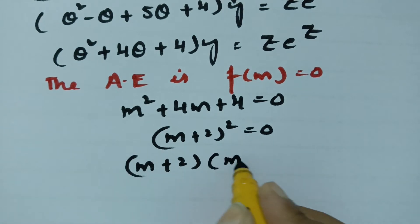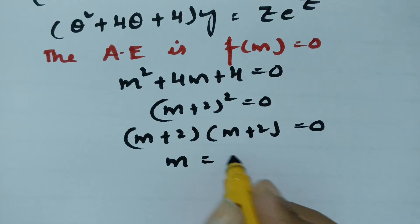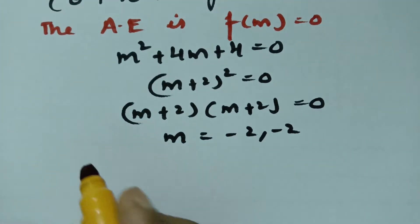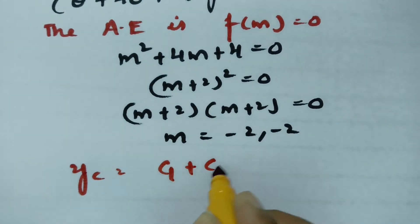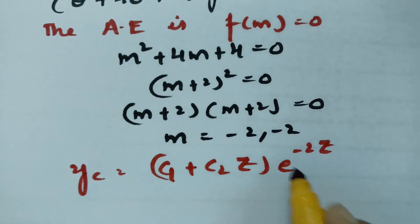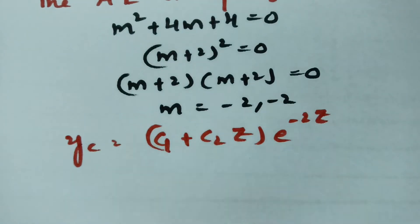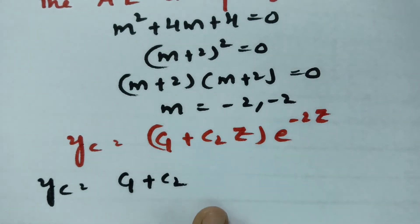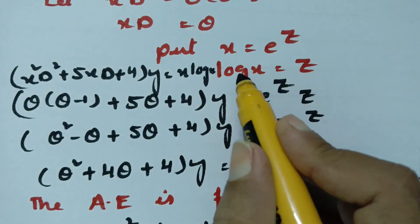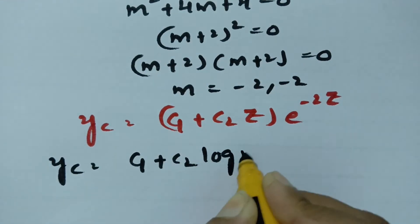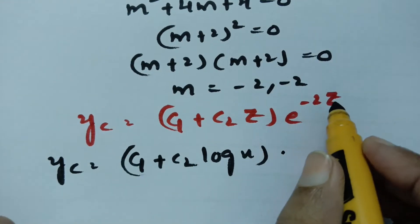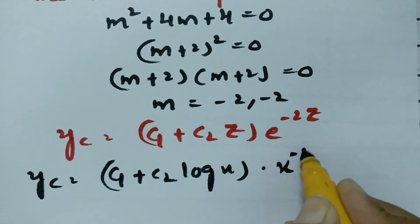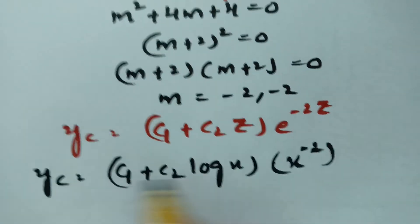This factors as (m plus 2)(m plus 2) equals 0, giving equal roots m equals negative 2, negative 2. The complementary function yc equals (c1 plus c2 z) times e to the power of negative 2z. Converting back: z equals log x and e to the power z equals x, so yc equals (c1 plus c2 log x) times x to the power of negative 2.